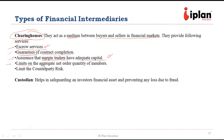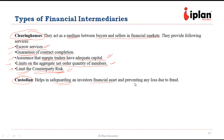Clearing houses can also provide limits on aggregate net orders and quantities of members, since they have information about the capacity of traders. This is how clearing houses limit counterparty risk — giving assurance that both parties are liquid enough to provide payment in case of adverse movement. Then we have custodians, which help in safeguarding financial assets and preventing any loss due to fraud.